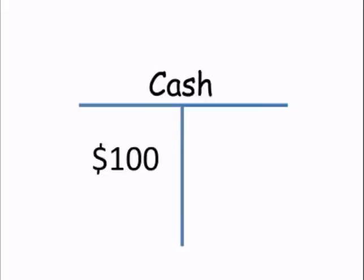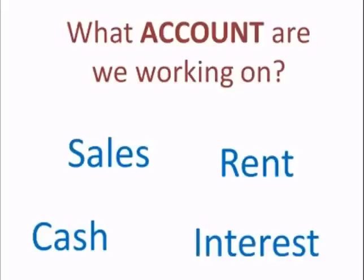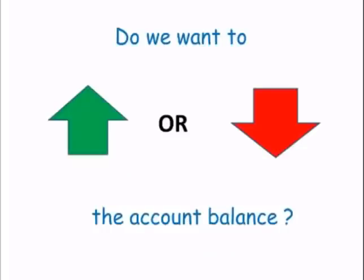Many students get confused as to whether the $100 should go on the left or on the right — in other words, whether we should debit or credit cash when cash increases. And more generally, when do we debit an account and when do we credit it? That all depends on the account we're working on. In this case we used cash, but other accounts include sales, rent, and interest. It all depends on whether we want to increase or decrease the balance of the account.